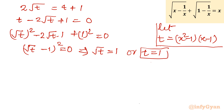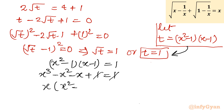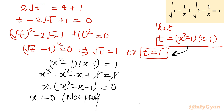The major task is done. We will solve by putting t = 1 back into the equation, giving (x² - 1)(x - 1) = 1. Expanding and simplifying, taking x common, we get x(x² - x - 1) = 0. So either x = 0, which is not possible because of our domain condition x ≠ 0, so we reject that.